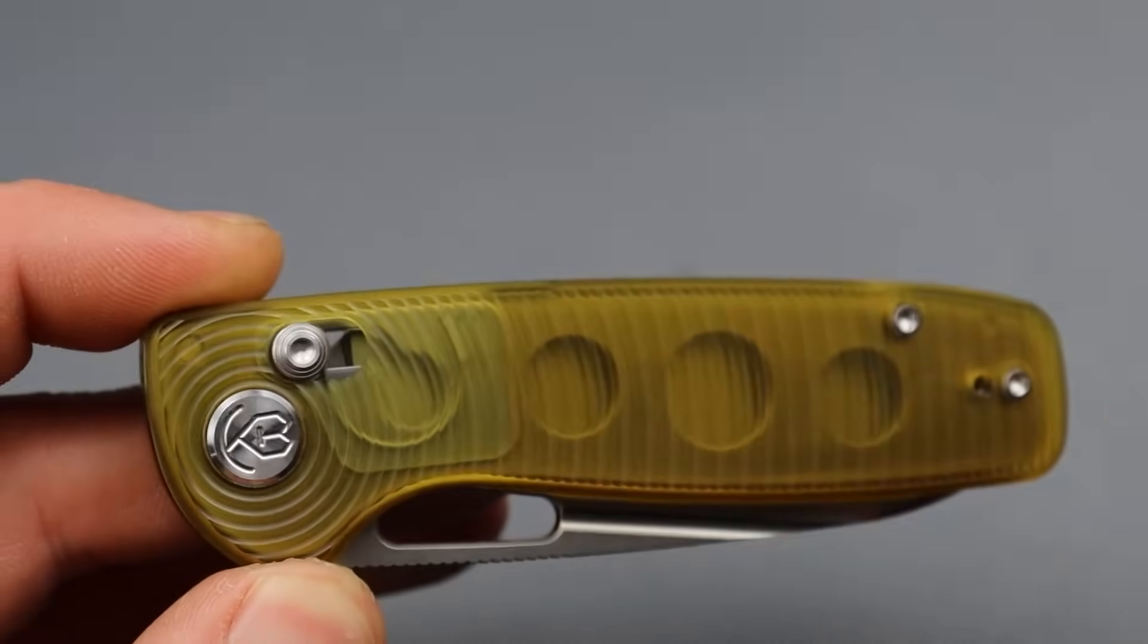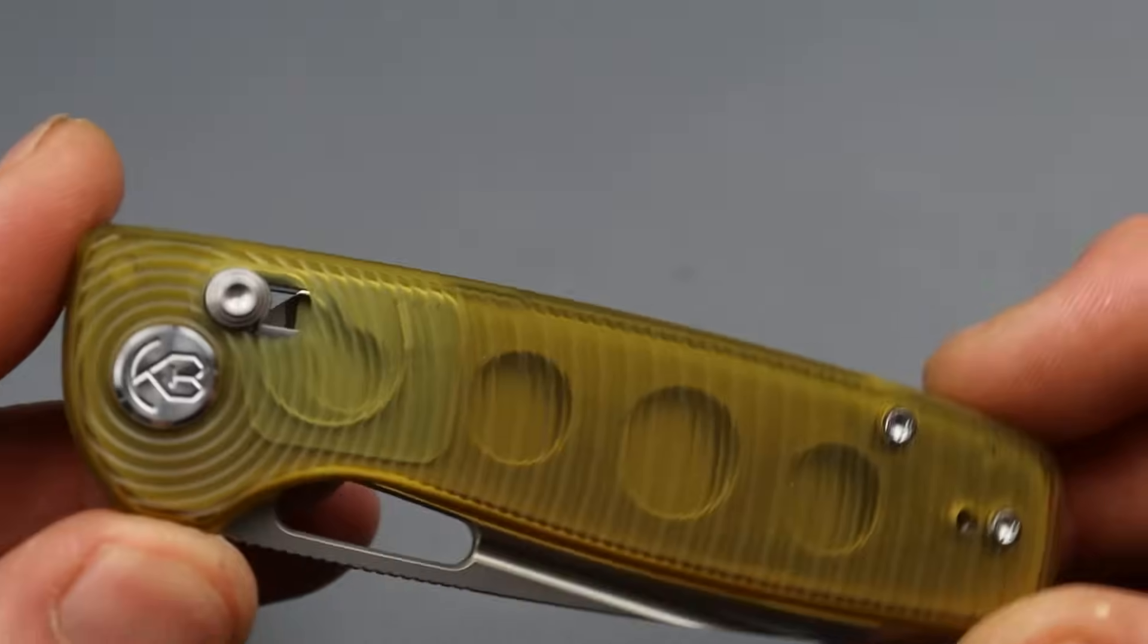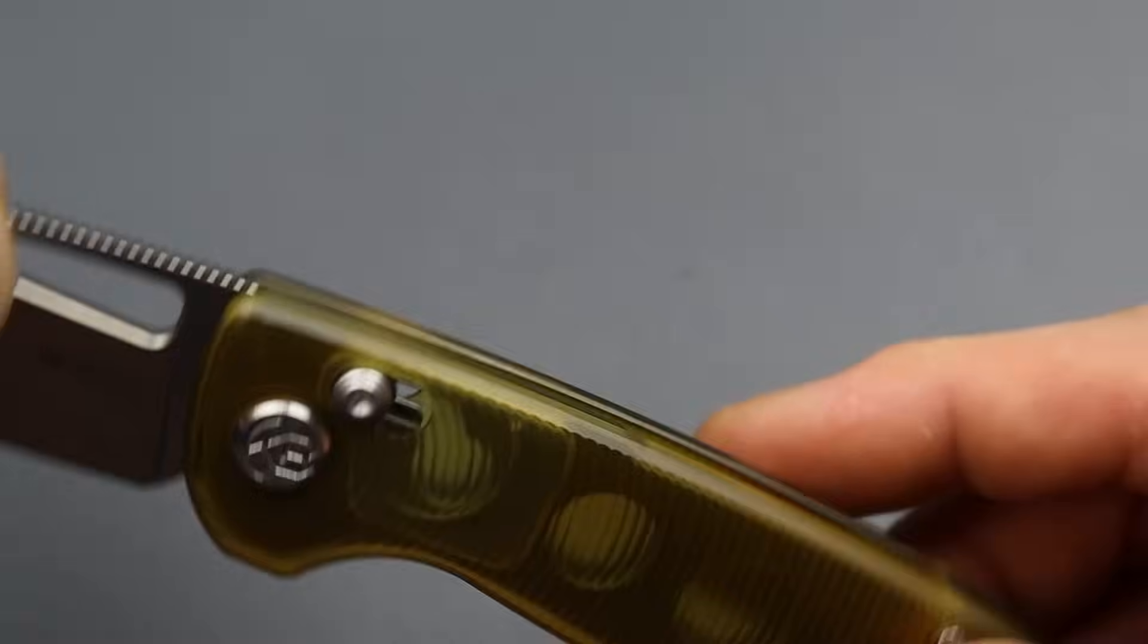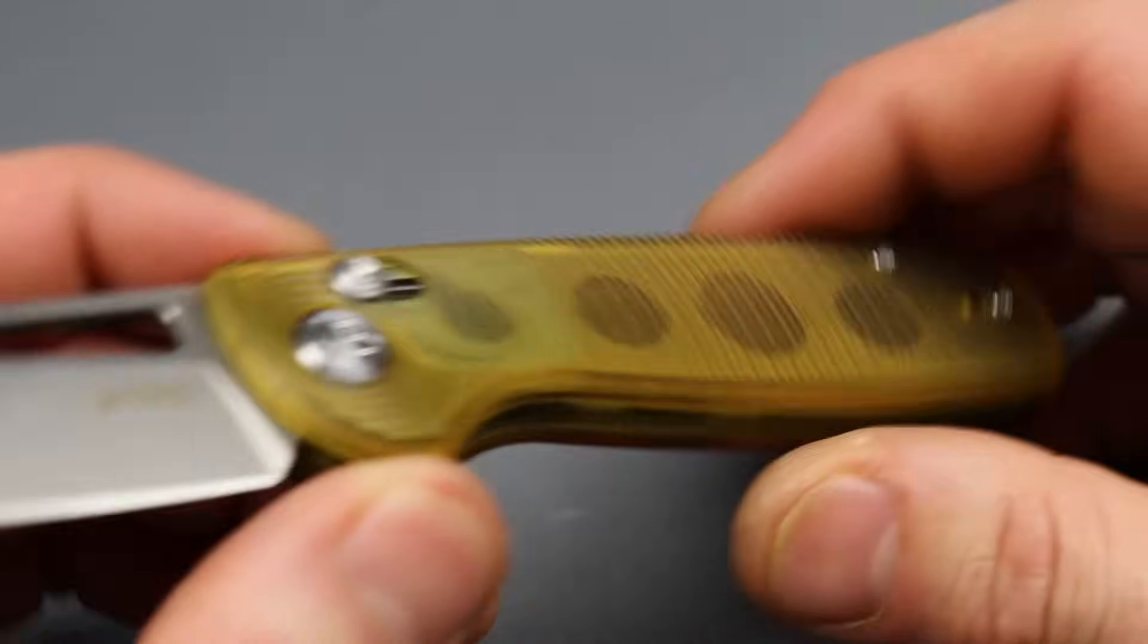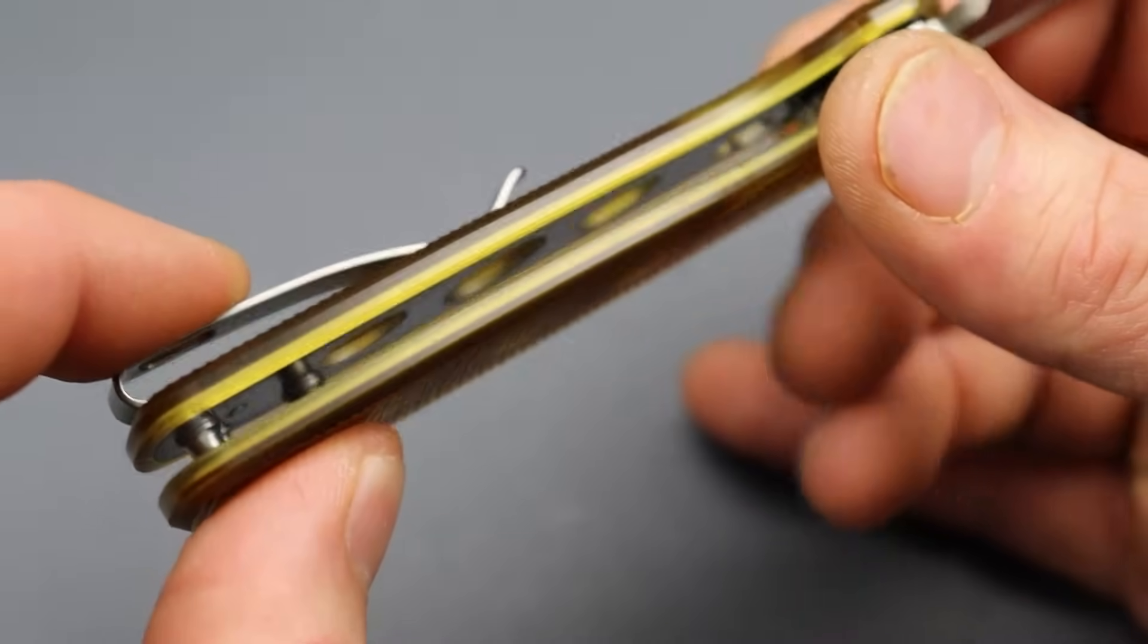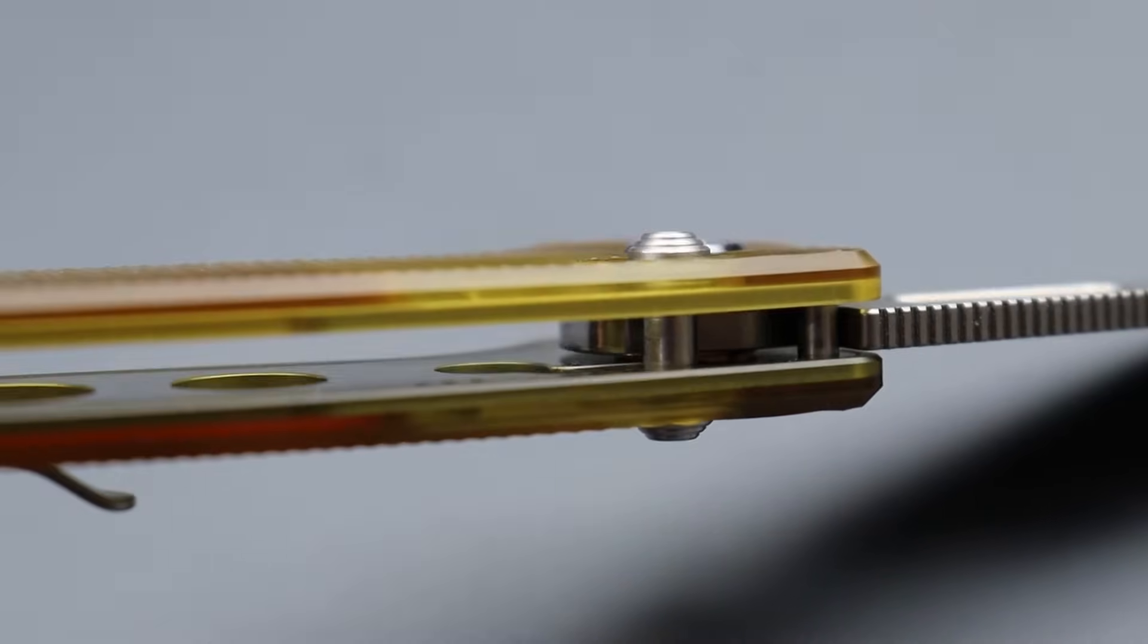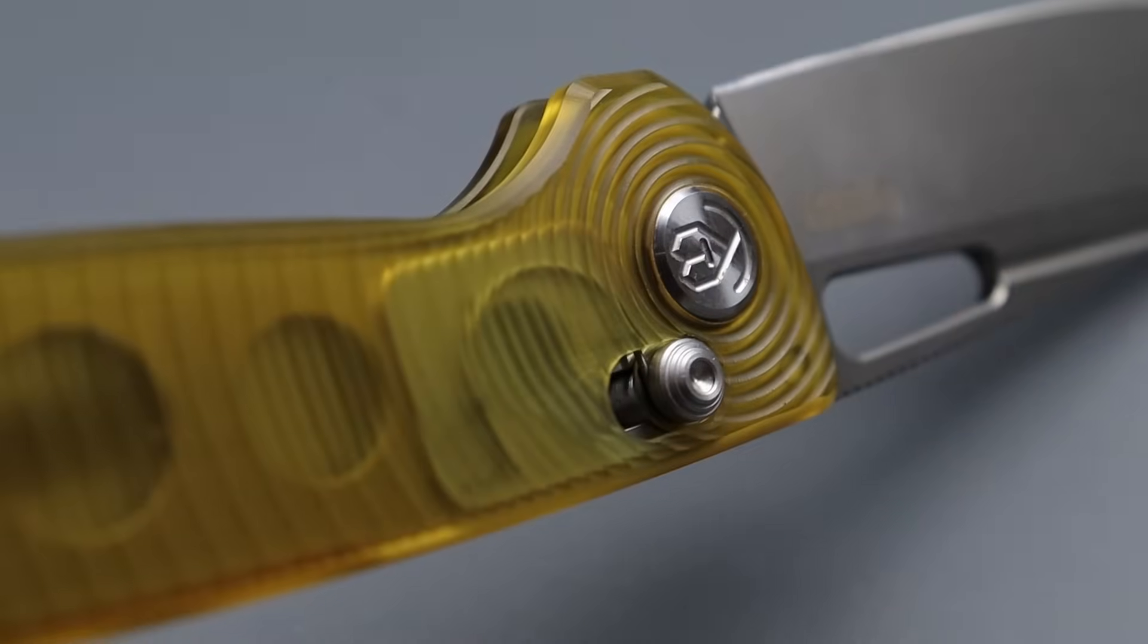This one has Ultim scales. I'm not sure if they have other versions with different scales, but you can see the Omega Springs in there. You can see it does have steel liners that are inset very nicely. Deep carry clip that is reversible, TA hardware. The crossbar lock is easy to get to. It's pretty smooth.